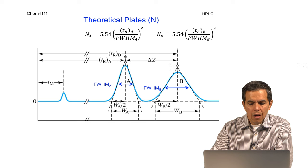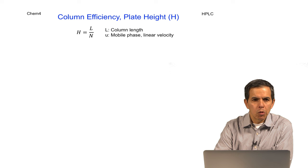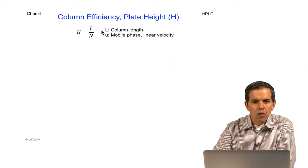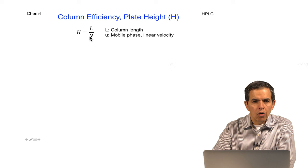A third component that is important to define the quality of the separation is the concept of column efficiency, or plate height. This is calculated as the length of the column divided by the number of theoretical plates. Highly related to column efficiency, or plate height, is the velocity of the mobile phase.